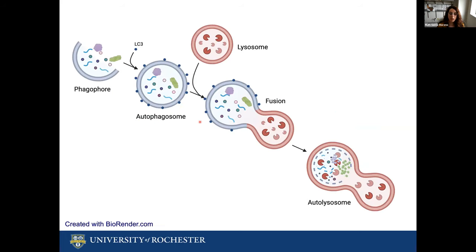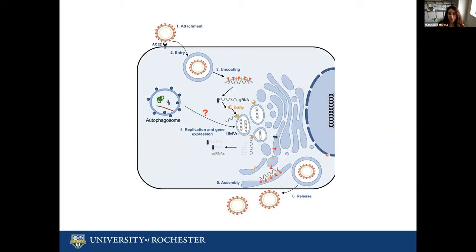Autophagy consists of the formation of double membrane vesicles, also called autophagosomes, for the collection of cargoes such as misfolded proteins and malfunctioning organelles that need to be delivered to the lysosome for their elimination. If we look at the schematic of the life cycle of coronaviruses, something peculiar in these infections is the active remodeling of the cellular membranes to generate double membrane vesicles, or DMVs, that work as viral replication factories. The structure of these DMVs closely resembles that of autophagosomes, which is why we hypothesize that SARS-CoV-2 may hijack the autophagy machinery as a source of these double membrane vesicles.